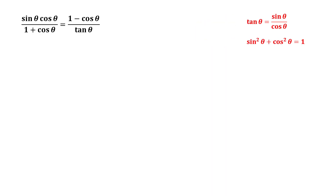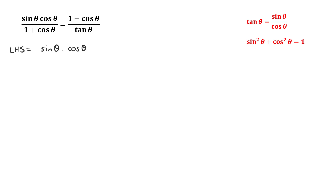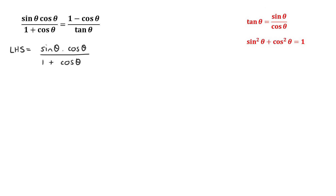Now the second example: prove that sin theta cos theta over (1 plus cos theta) equals (1 minus cos theta) over tan theta. When starting on the left-hand side, we notice we don't have any identities — nothing in the numerator or denominator. Writing it out: sin theta cos theta over (1 plus cos theta) — we have no sin squared plus cos squared and no tan theta equals sin theta over cos theta to use.